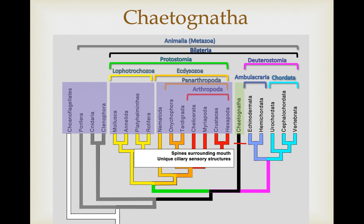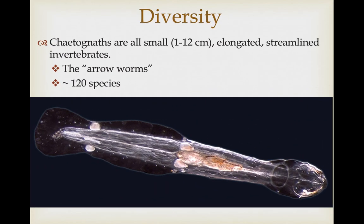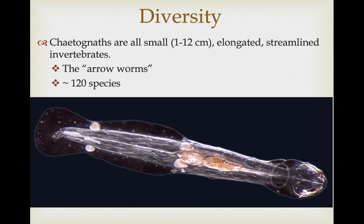As far as synapomorphies for the group, they have spines that surround the mouth that are important in foraging, and they also have a unique ciliary sensory system. The Chaetognaths are very small, elongated, streamlined invertebrates commonly referred to as the arrowworms. There are only about 120 species, and they all have caudal fins and paired lateral fins, and usually a very translucent appearance, which is important for their foraging and anti-predator strategies.